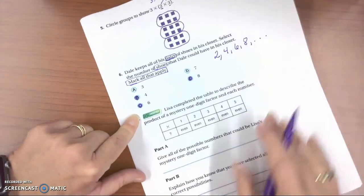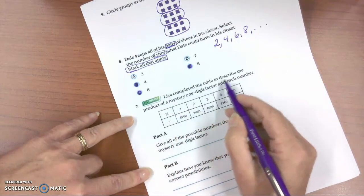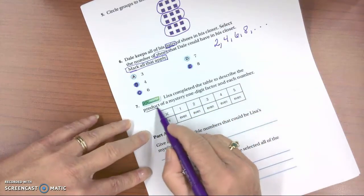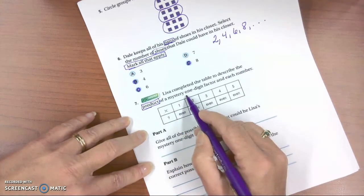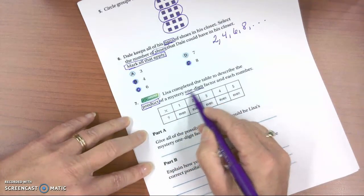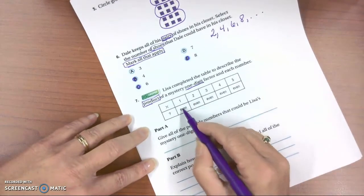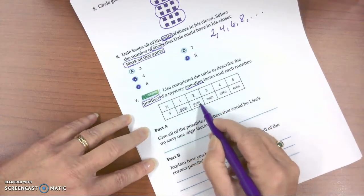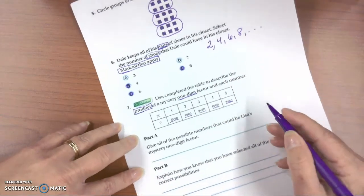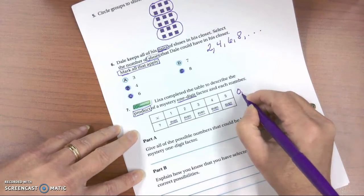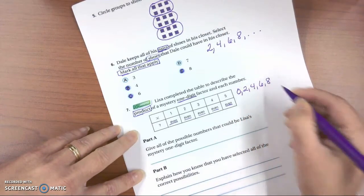The next question is a go-deeper question. Lisa completed the table to describe the product, product being the answer to multiplication, of a mystery one-digit factor and each number. So it says the products are all even. So let's refer back to this problem. If the products are all even, we know that they need to end in 0, 2, 4, 6, or 8.